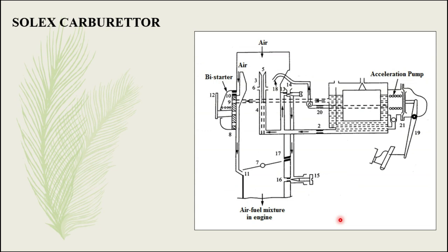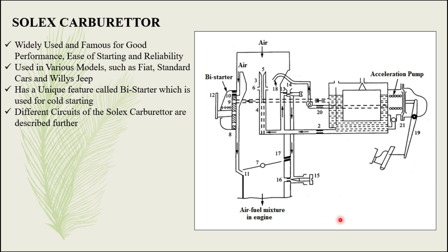Now coming to the Solex carburetor. This is the schematic diagram. It is widely used and famous for good performance, ease of starting, and reliability. It is used in various models such as Fiat, Standard cars, and Willys Jeep. It has a unique feature called the bias starter which is used for cold starting, and the different circuits of the Solex carburetor are described further.